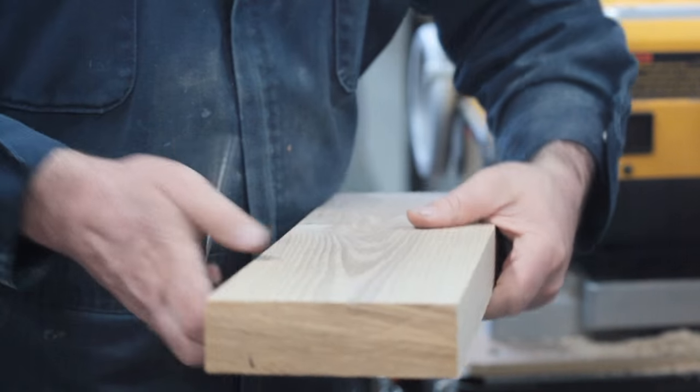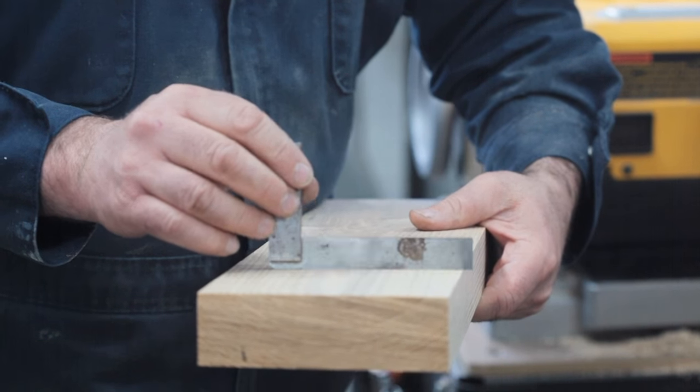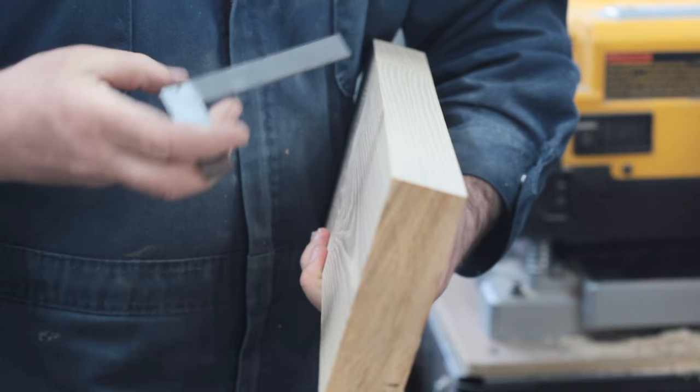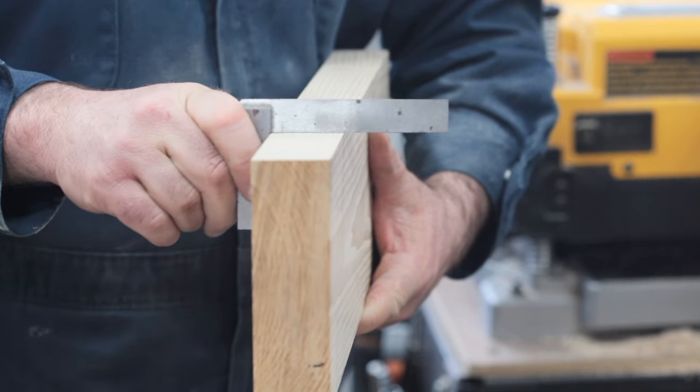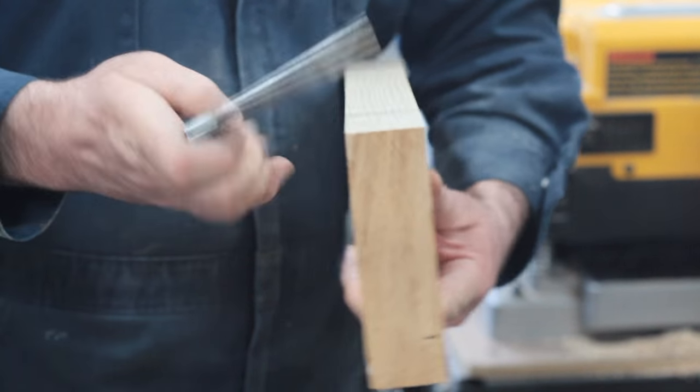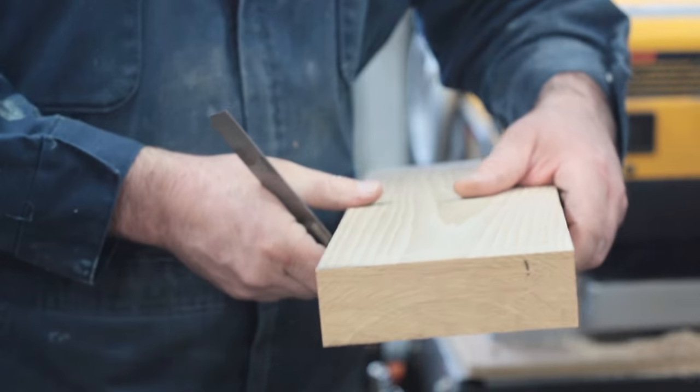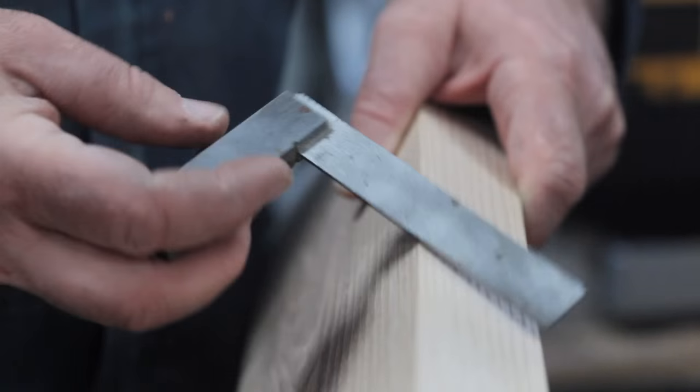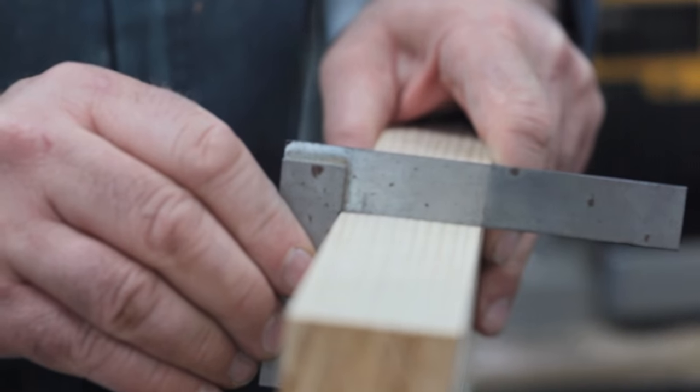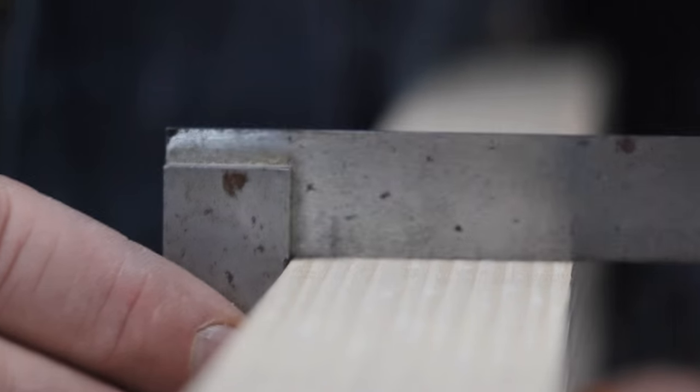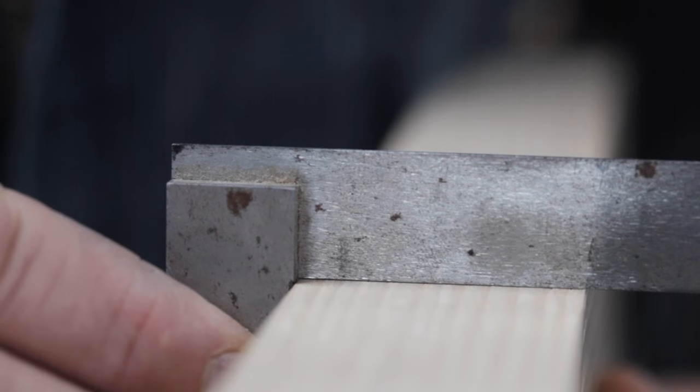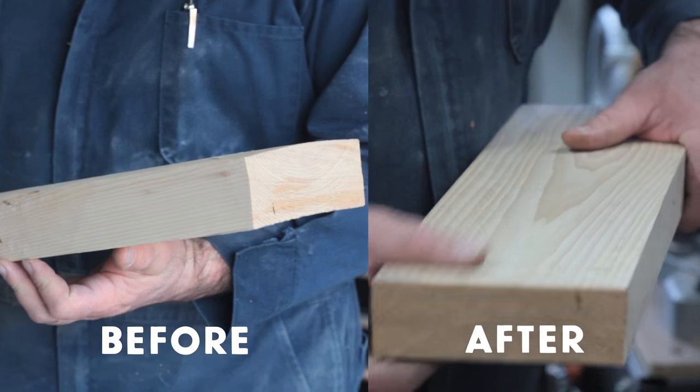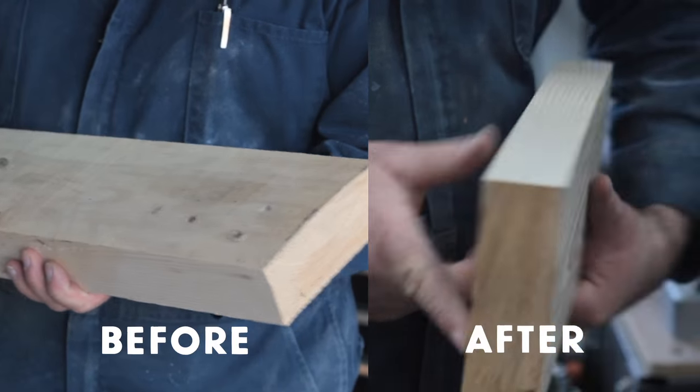So there you have it. We've got a nice flat smooth square board. There's one edge that we haven't done anything with yet but that'll be trimmed to final width on the table saw with the blade set to 90 degrees but as you can see both of these faces are now flat which is what we want and the jointed edge is perfectly square to it. This was a rough piece of wood and now it's smooth and true and we can do some great things with this kind of wood.